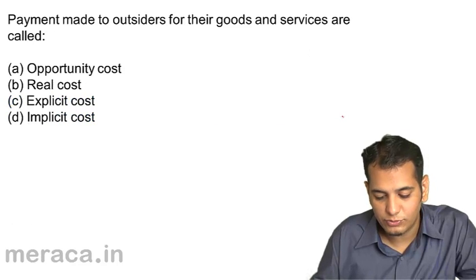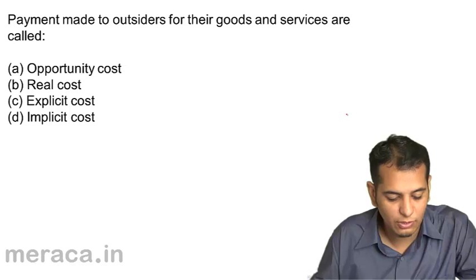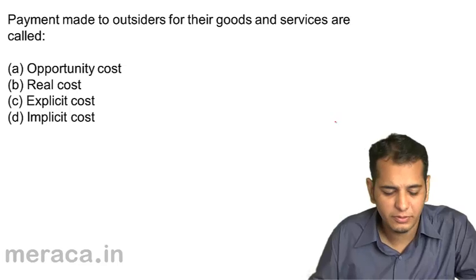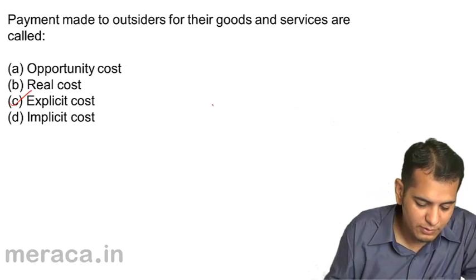Payment made to outsiders for their goods and services are called explicit costs. You are making the payment, so these are explicit costs.